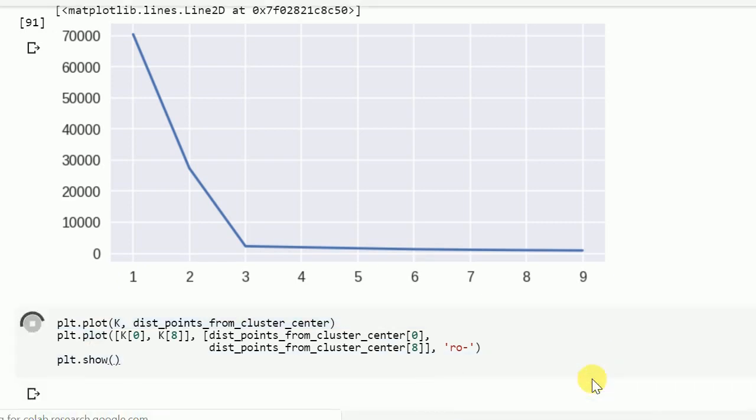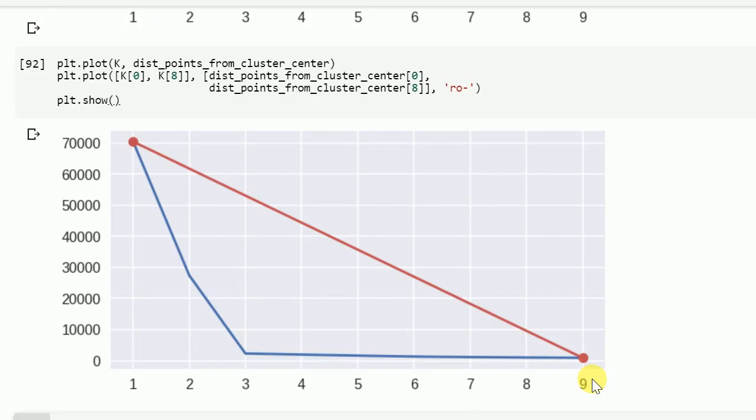So what I simply do is I create a line joining the first point and the last point, that is k equal to 1 and k equal to 9 are my points where I join the two points.